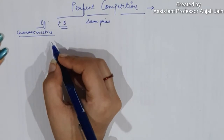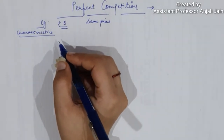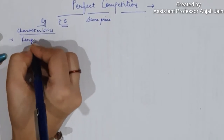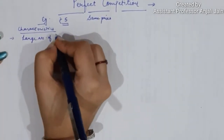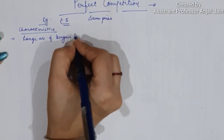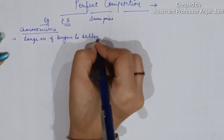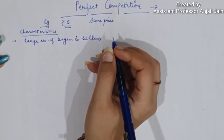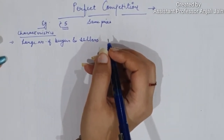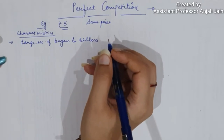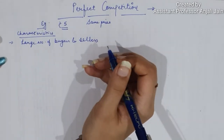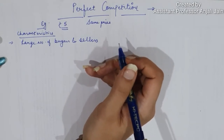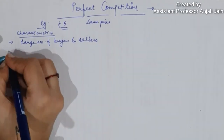Let's discuss the characteristics or assumptions of perfect competition. The first characteristic is large number of buyers and sellers. In perfect competition, there are a large number of buyers and sellers, but the size of each is relatively small. No single buyer or seller is large enough to affect the market forces.